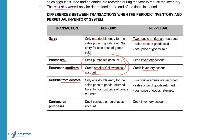For returns from debtors: in the perpetual system you record two double entries — one at sales price, debiting debtors' allowances and crediting debtors' control, and a second at cost price, debiting inventory and crediting cost of sales. In the periodic system, only one double entry for the sales price of the goods returned is recorded; no entry is made for the cost price.